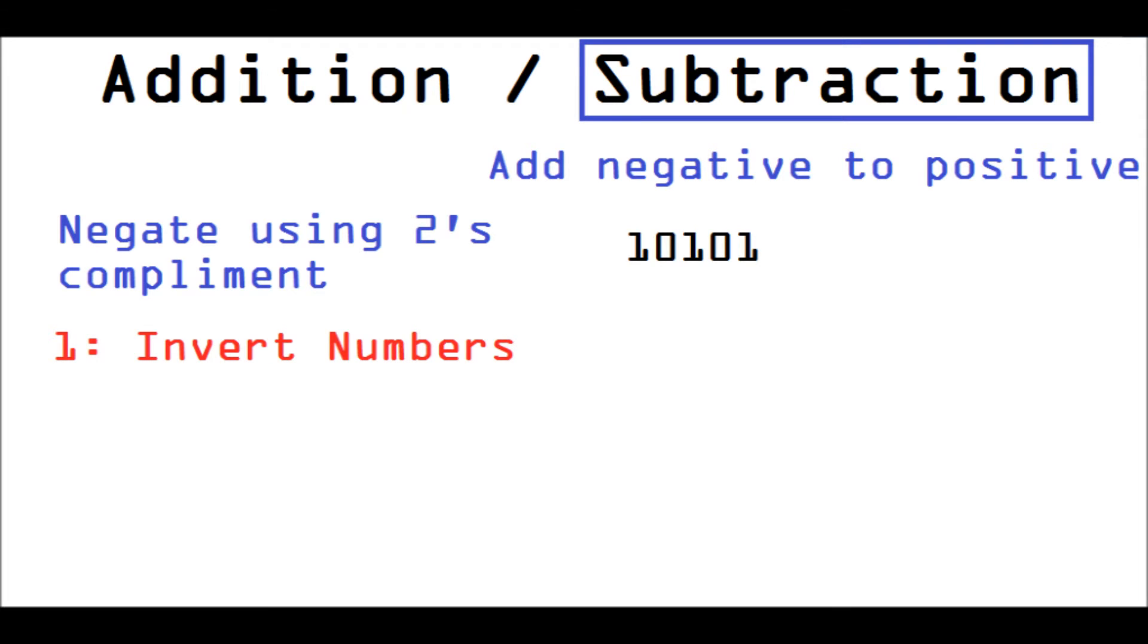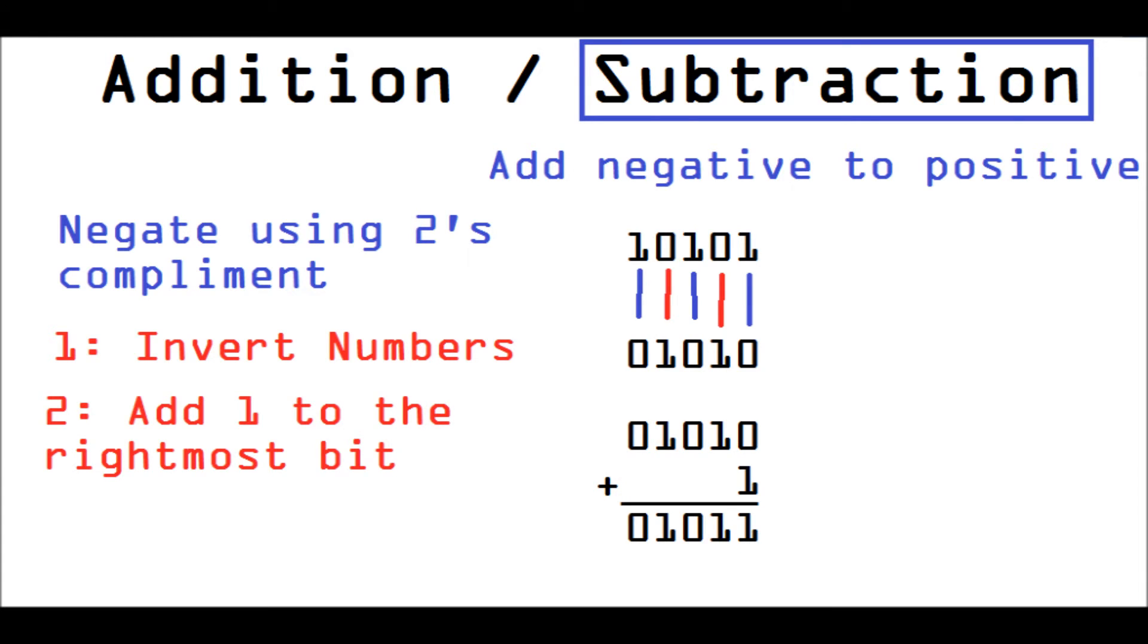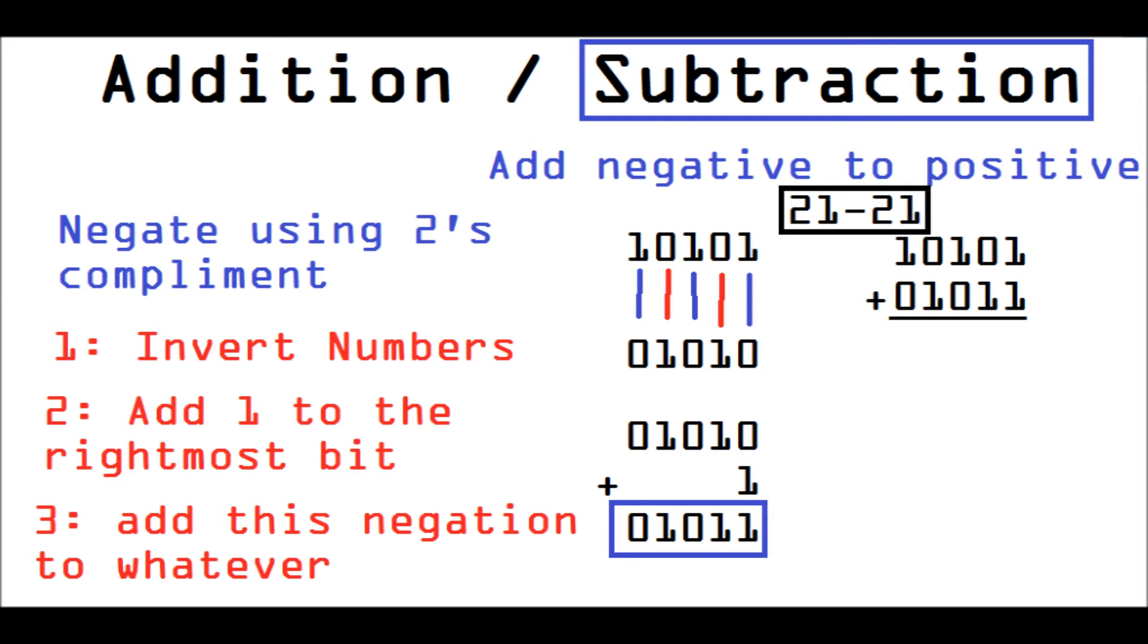Invert the numbers. So, all the ones turn into zeros, and all the zeros turn into ones. And the next thing we have to do is we have to add one to the rightmost bit. Then we get the result, and we have to add that negation to whatever it is we want to subtract from.